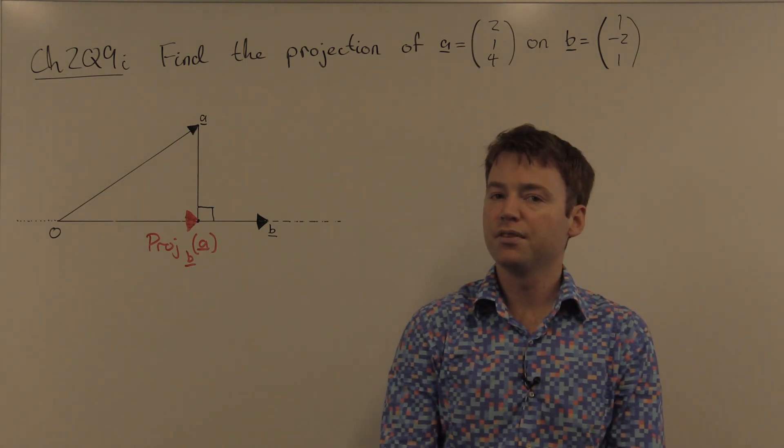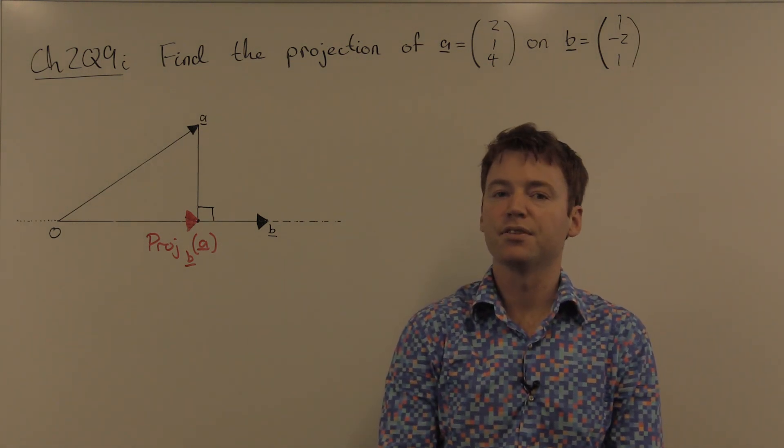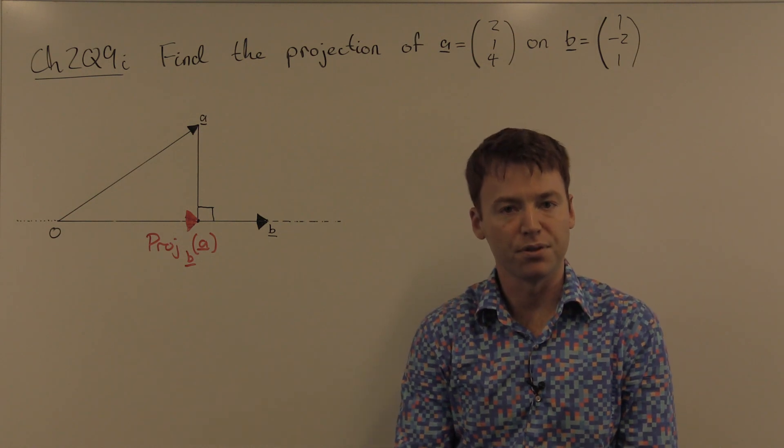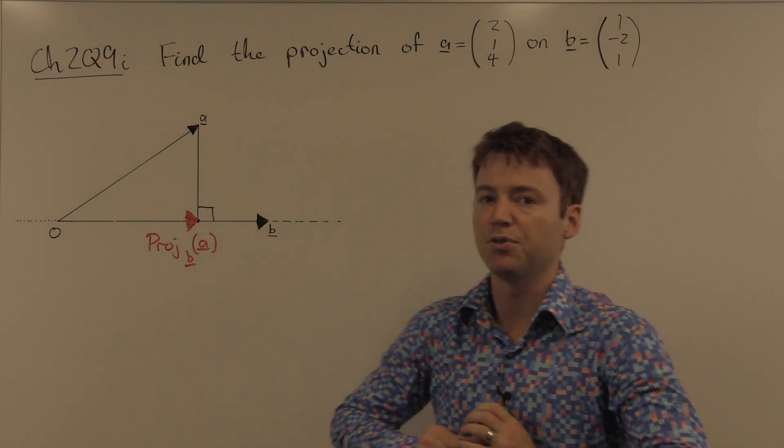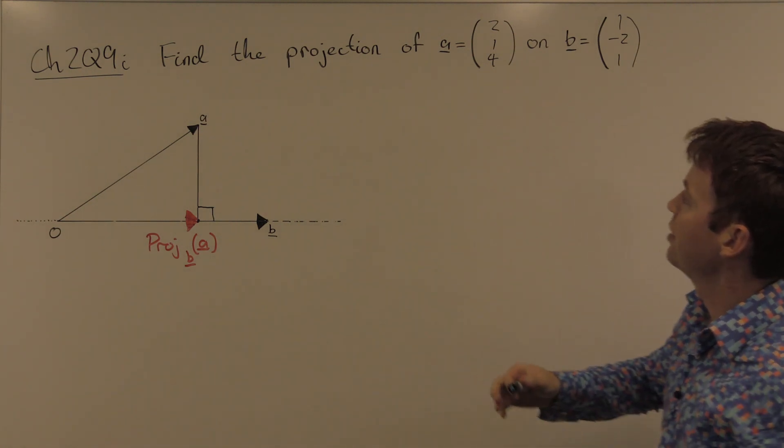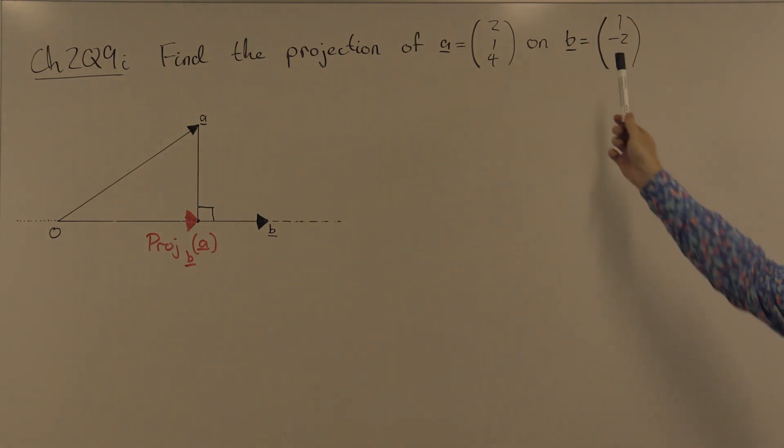Hello, my name is Daniel Mansfield. Welcome to the University of New South Wales Math 1131 algebra course. In this video, we do chapter 2, question 9i. Find the projection of vector a on vector b.